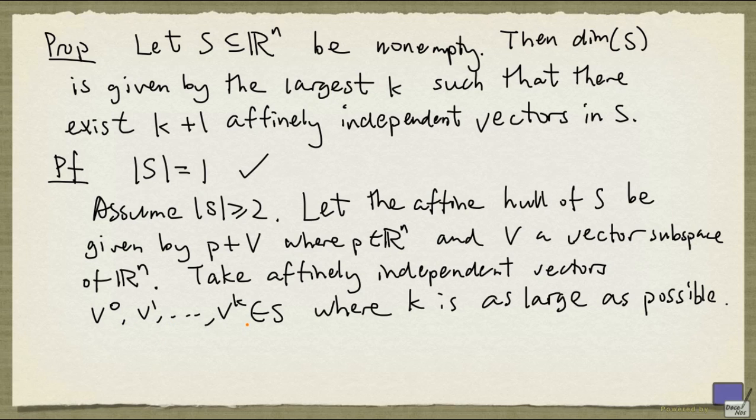We're now going to show that the dimension of S is exactly k. From a previous video, we know that these vectors, v¹ minus v⁰, v² minus v⁰, all the way up to v^k minus v⁰, are linearly independent vectors in V. And what that means is, as a vector space, the dimension of V is at least k.